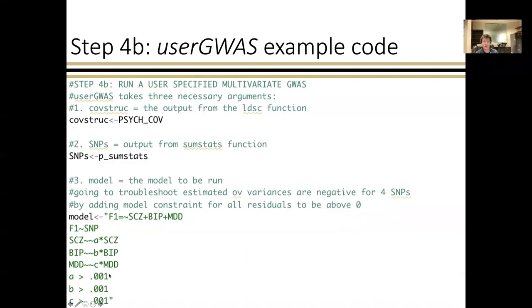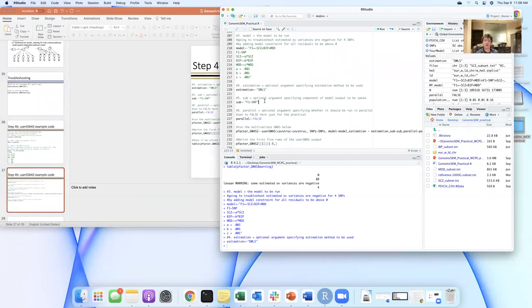If we now go over and run that, I want to mention that another optional argument for user GWAS is this sub-argument. This is whether or not you want to save a particular piece of the model output. The common factor GWAS is automatically only saving the effect of the SNP on the common factor. What the sub-argument does is it allows you to tell user GWAS that, look, for each of these SNPs, I don't want to save all of the model output, including the factor loadings and the residual variances. I really, for the sake of memory, want you to save the effect of the SNP on the common factor. So sub does not change at all how the model is estimated. It changes how large the output file is, and I would highly recommend setting this argument. So now we're going to run this.